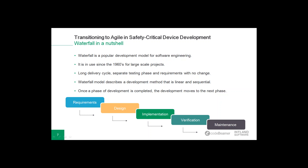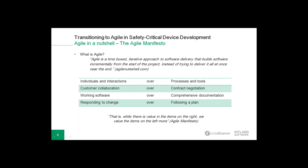Before we jump into the transition to Agile, I would like to set up the principles of the two different methodologies. The first, waterfall, is a popular development model for software engineering in use since the 1960s for large-scale projects. Waterfall has a long delivery cycle, a separate testing phase, and requirements with no change. It describes a development method that has a linear and sequential design process, treating analysis of requirements, design, implementation, verification, and maintenance as distinct phases.